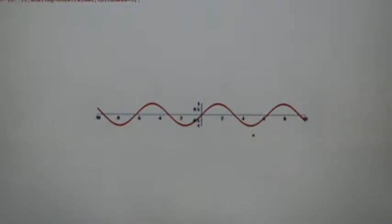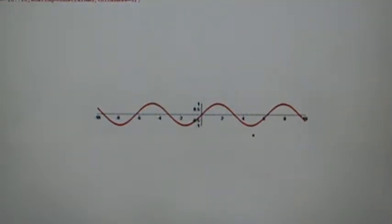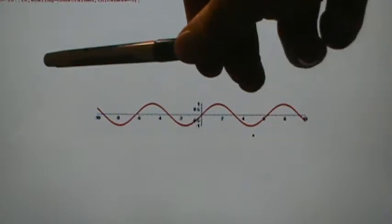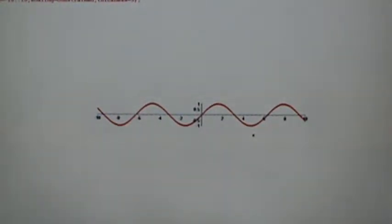Just a quick refresher: the horizontal line test says that a function is going to pass the horizontal line test if any horizontal line that you draw over the graph of that function is going to intersect the function at most once. But here's the graph of the sine function, and we see that any horizontal line we draw is either going to touch the graph nowhere — like if we draw a horizontal line way up high, it's not going to hit the graph at all — and that's fine.